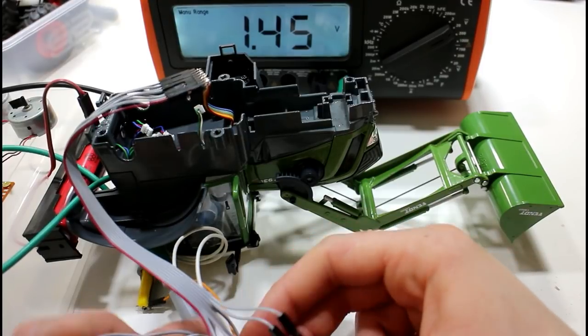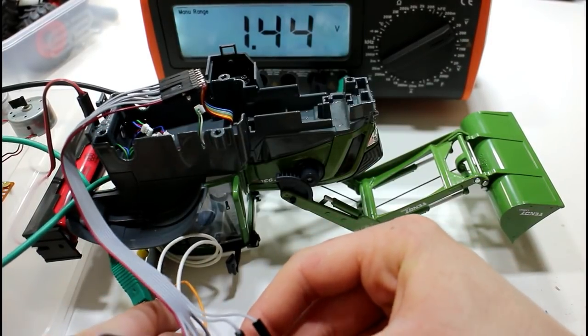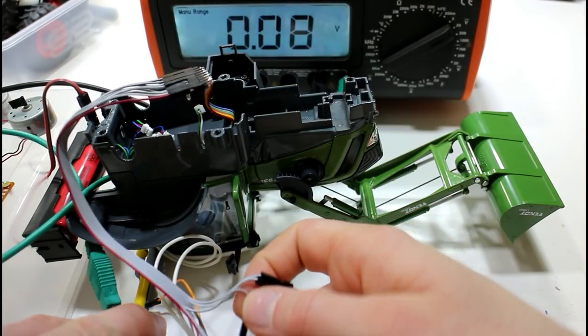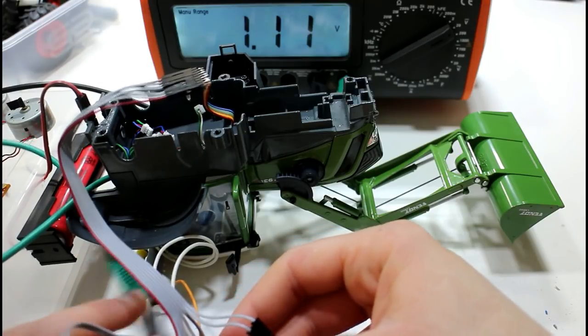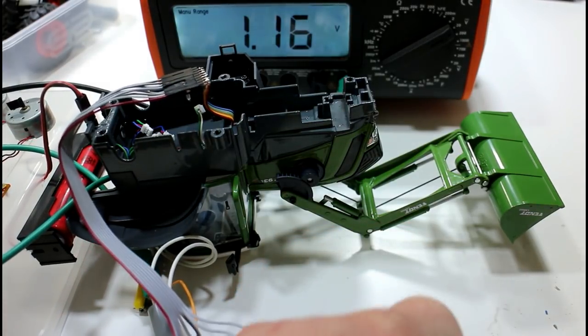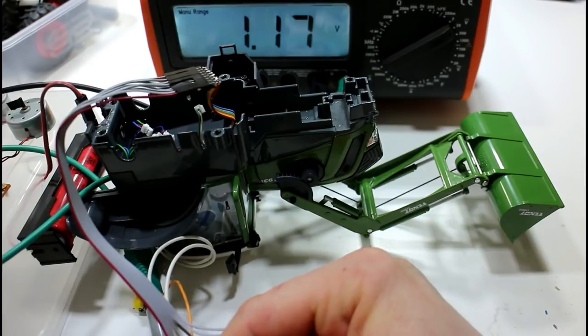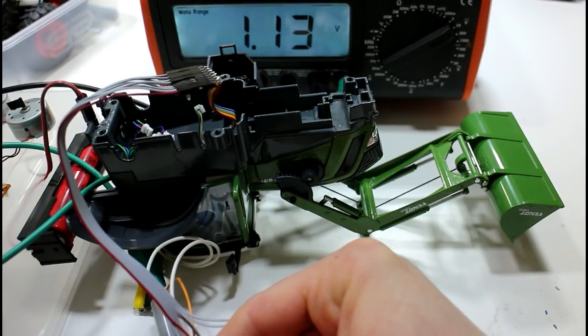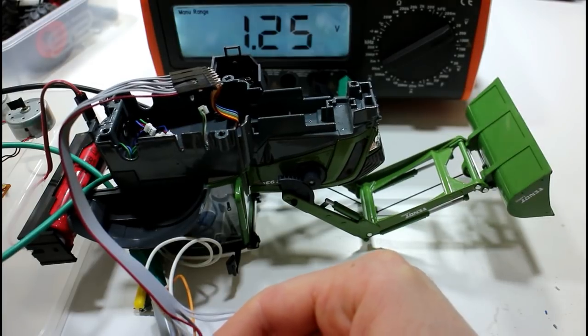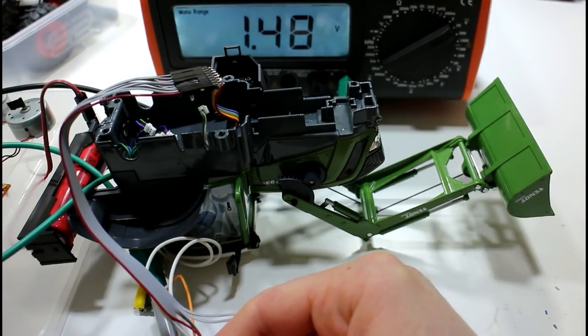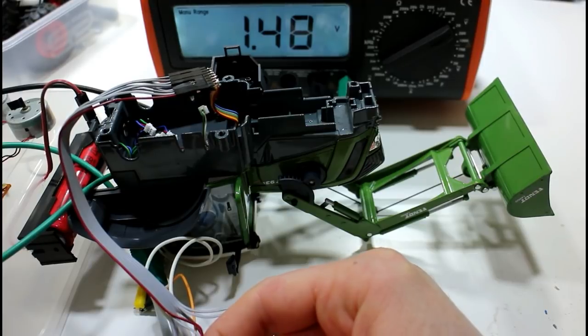Now I want to hook up our signal to the orange wire. We are using the motor which is on the red and yellow wires, so that will move our bucket. Looks like when the bucket lowers, the voltage goes up.